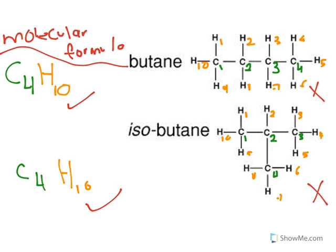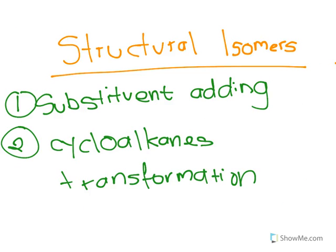To draw structural isomers — for example going from butane to isobutane — we have two methods. The first method is substituent adding, which means we add substituents. The second method is called cycloalkanes transformation. For the second method, please consult with your teacher whether this method is acceptable — tell them what it is and how you do it, and if they say it's okay, go ahead.